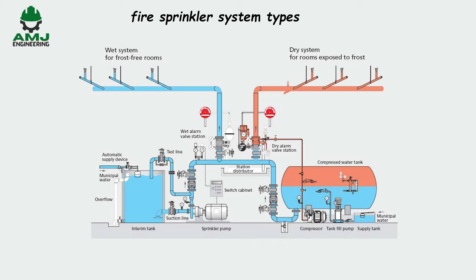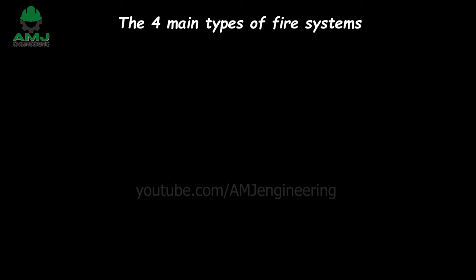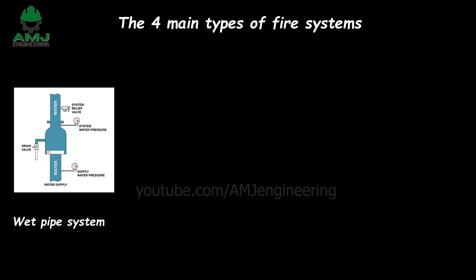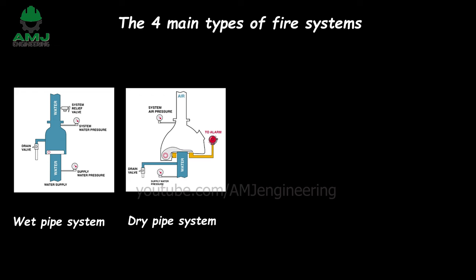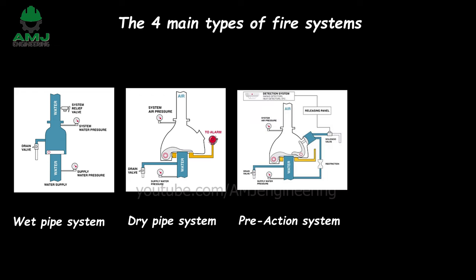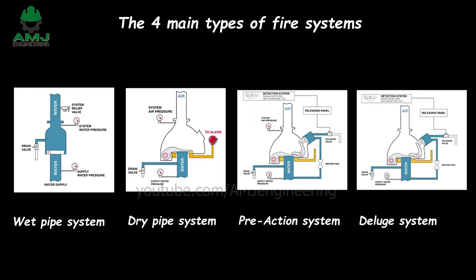Now that we have covered the most common sprinkler head types, let's discover the fire sprinkler system types. There are four main types of systems: wet pipe system, dry pipe system, pre-action system, and deluge system.